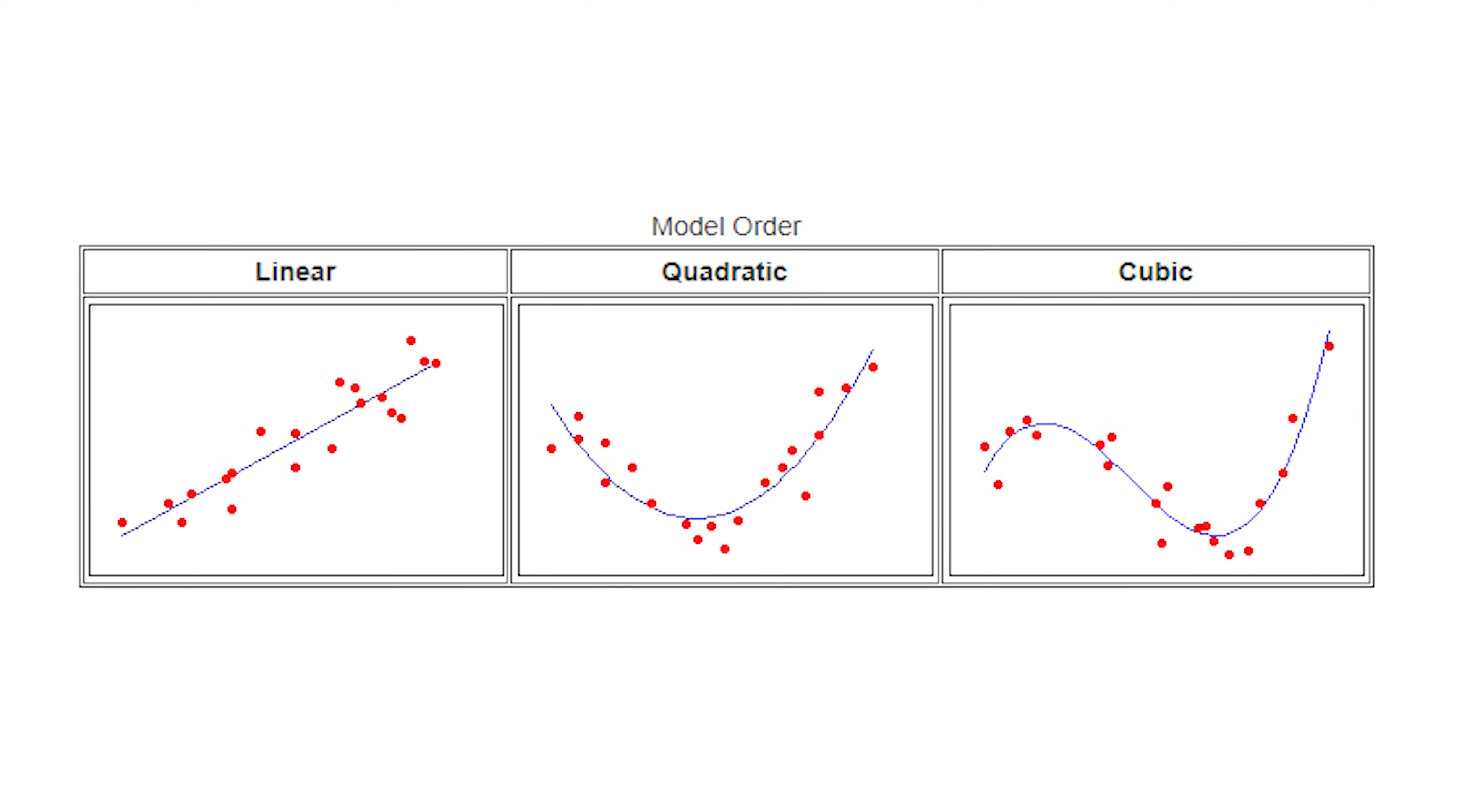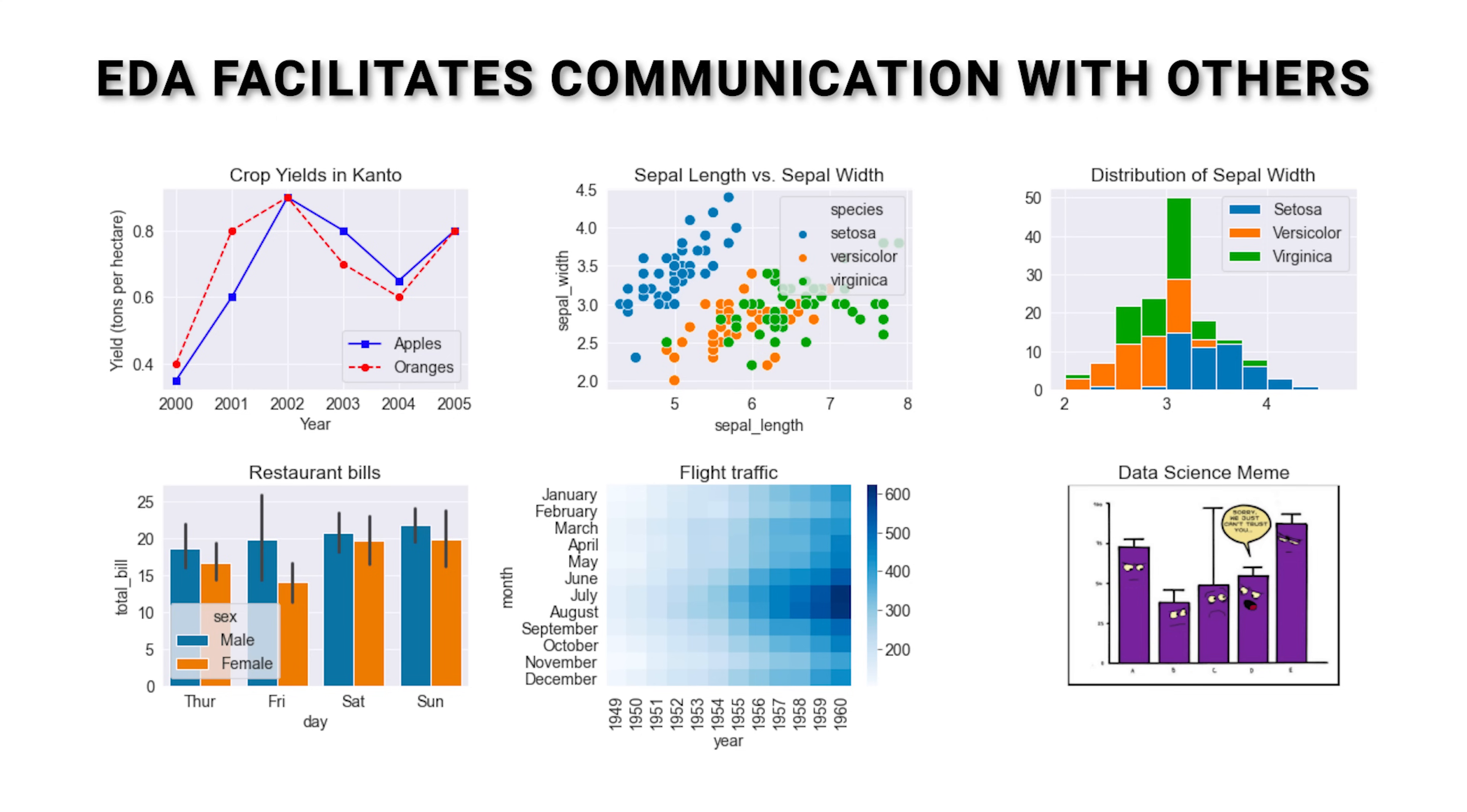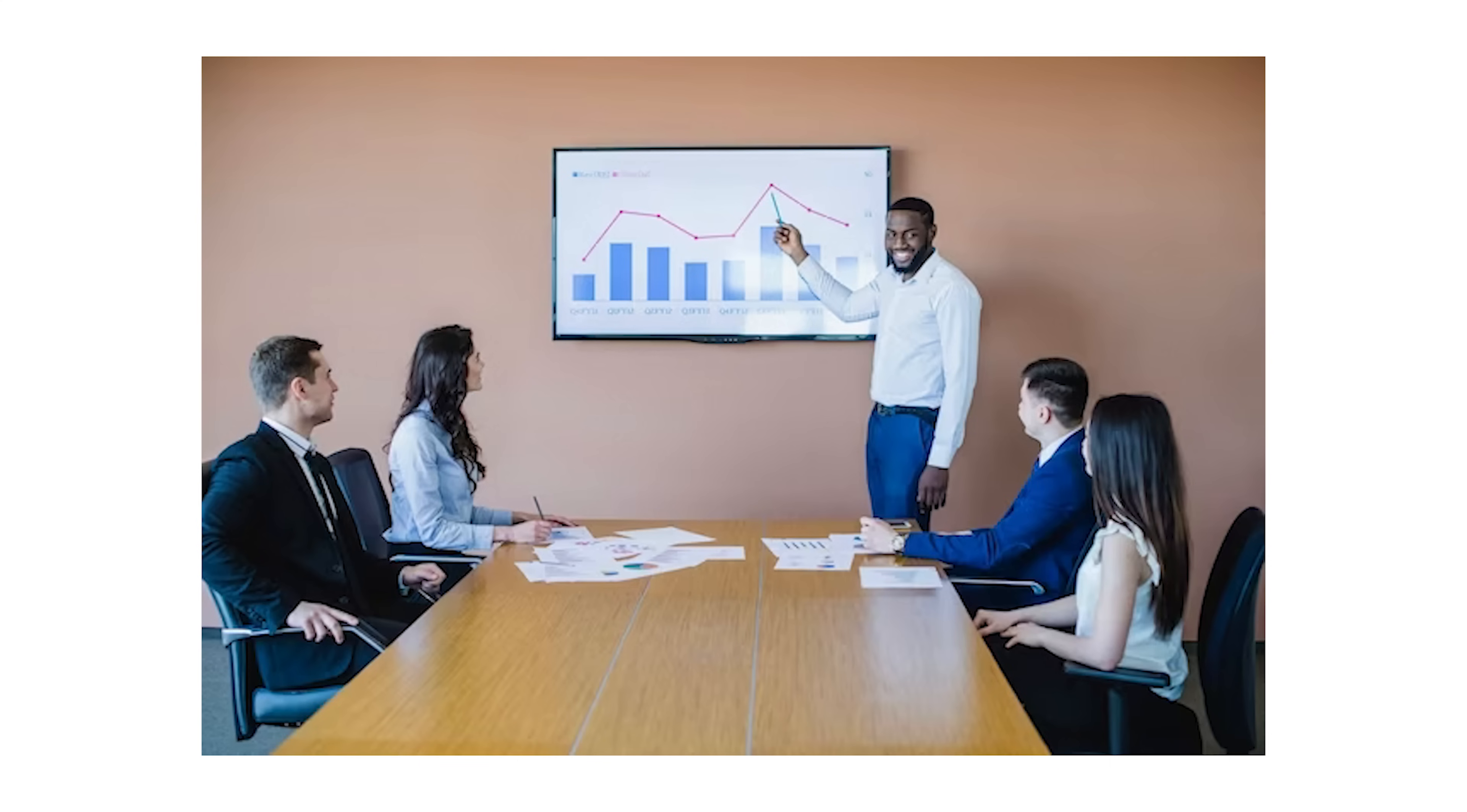EDA can indicate whether simpler models, for example, linear regression, or more complex algorithms like SVM or neural networks are appropriate based on the relationships in the data. Last but not least, EDA facilitates communication with others. Data visualizations produced during EDA, for example, scatter plots, histograms, and box plots, make it easier to explain findings and potential insights to non-technical stakeholders, and will help guide future iterations of the modeling process through feedback loops with non-technical stakeholders.